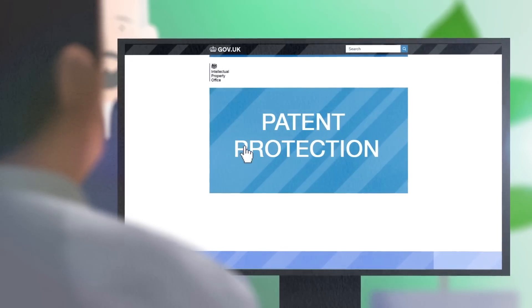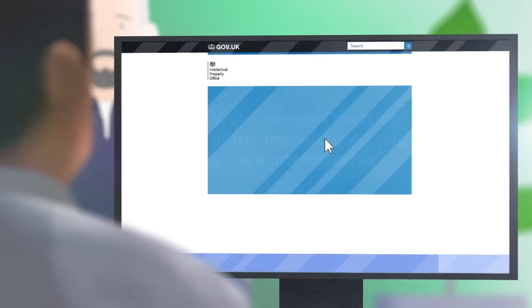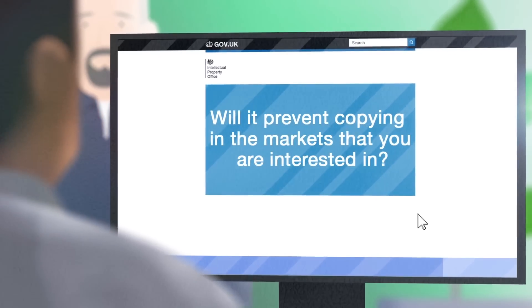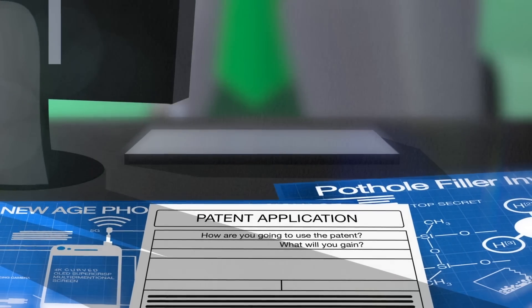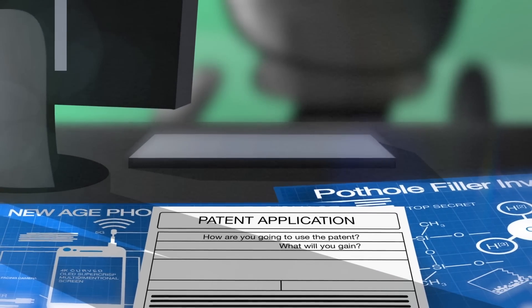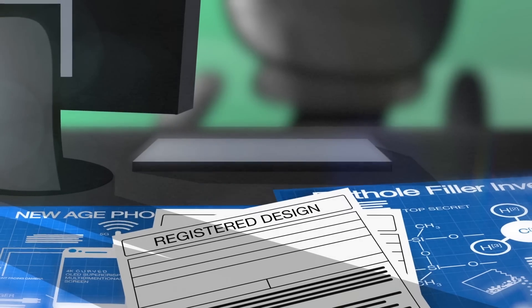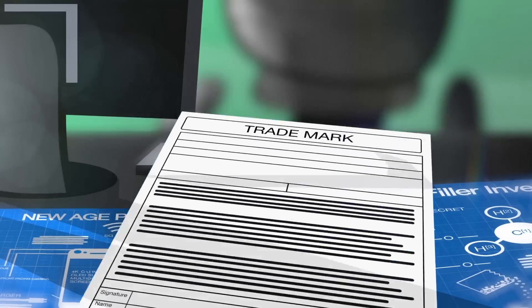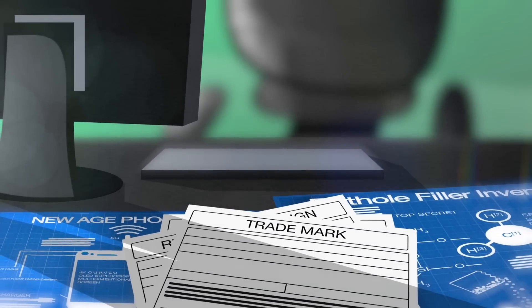You need to make sure that the protection a patent offers would help prevent copying in the markets that you are interested in. It may be that a registered design could be a better alternative for you, or you could give your invention a name, protect it with a trademark, and build up the brand and market share that way.